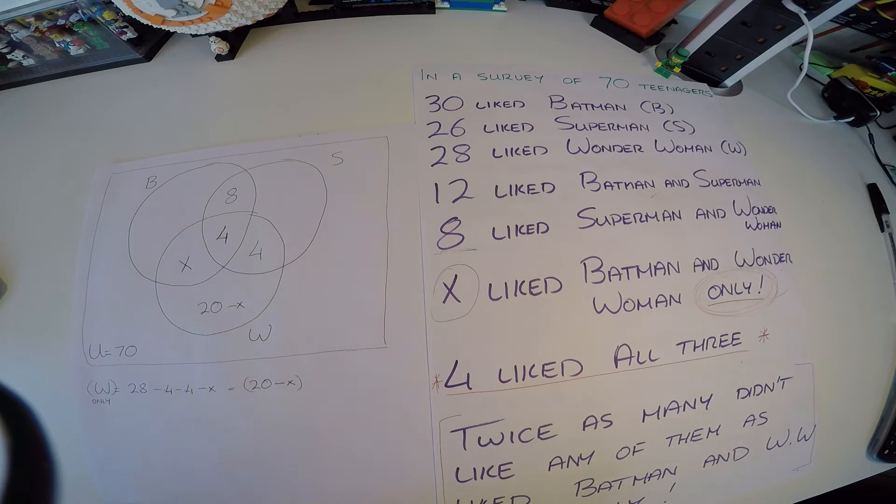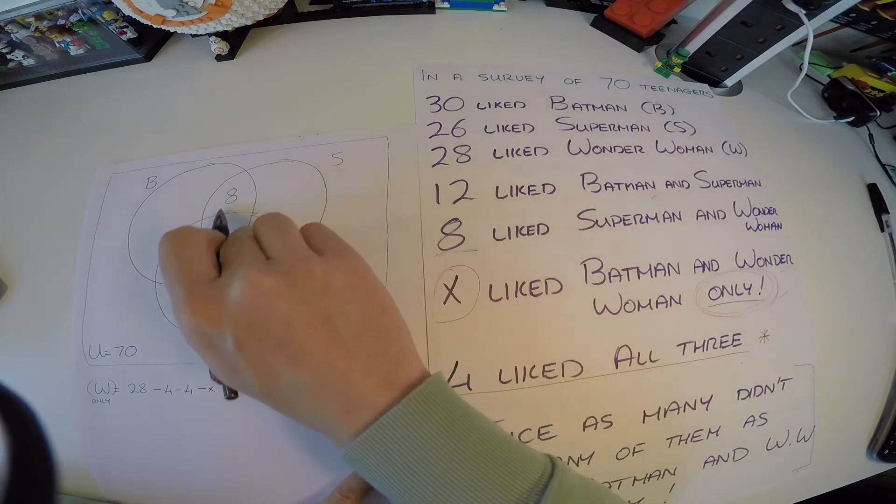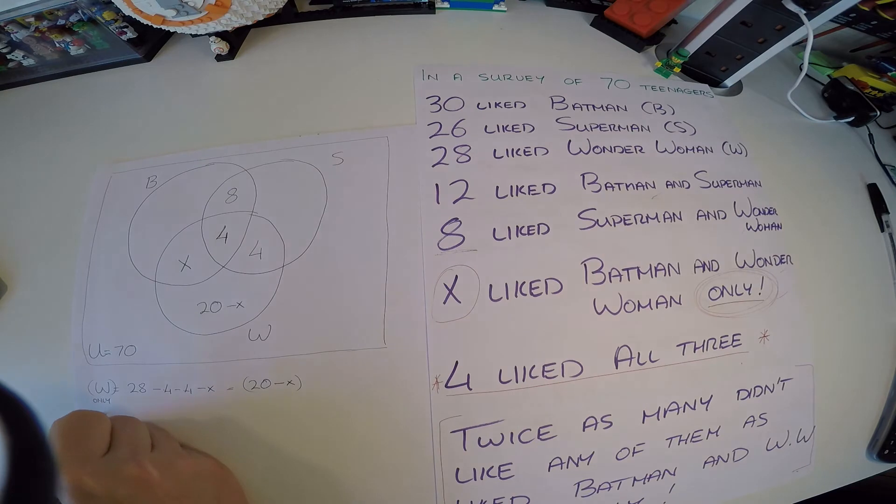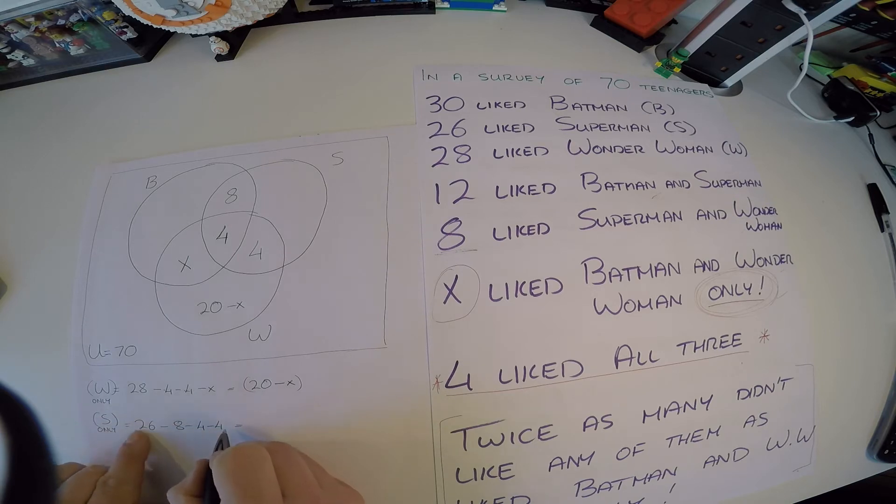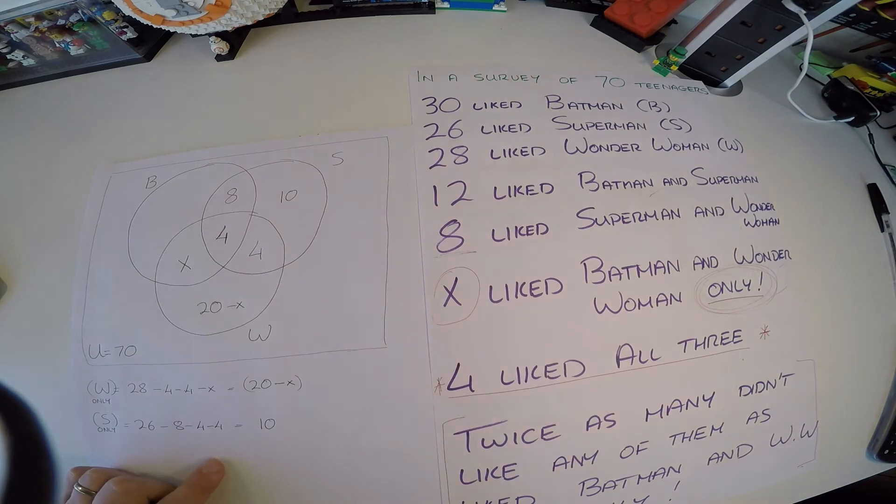It says 26 like Superman. Well, we can see in the Superman section we actually have all numbers, no x's, so Superman is going to be made up of Superman only. He's going to be made up of the 26, and we're going to subtract the numbers that we know already, minus 4 and minus 4. So 8 and 4 is 12, another 4 is 16, 26 minus 16 leaves us 10. That means there's 10 in here.